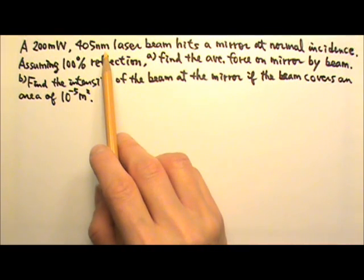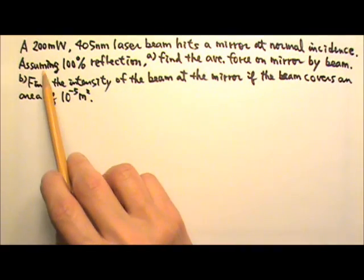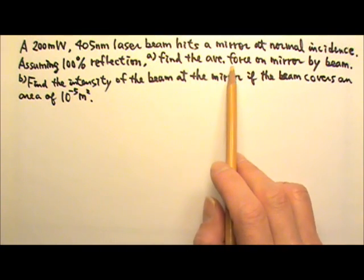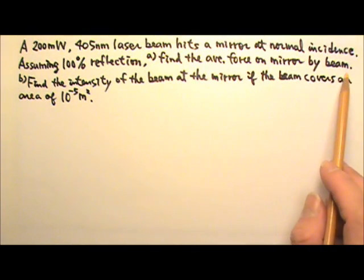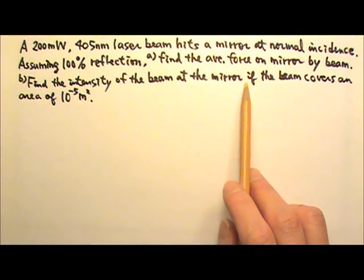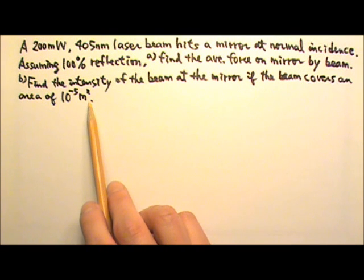A 200mW, 405nm laser beam hits a mirror at normal incidence. Assuming 100% reflection, part a: find the average force on the mirror by the beam. Part b: find the intensity of the laser beam at the mirror if the beam covers an area of 10 to the negative fifth meter squared.